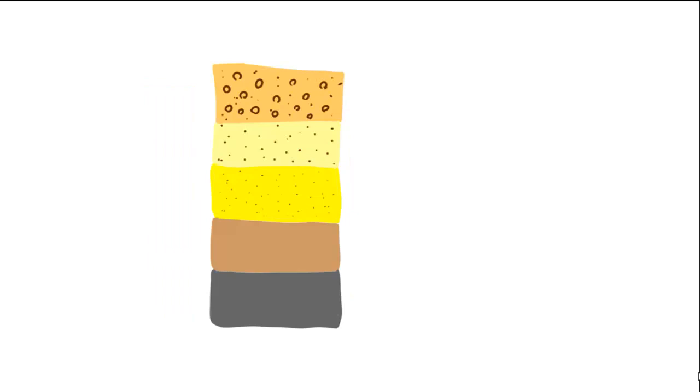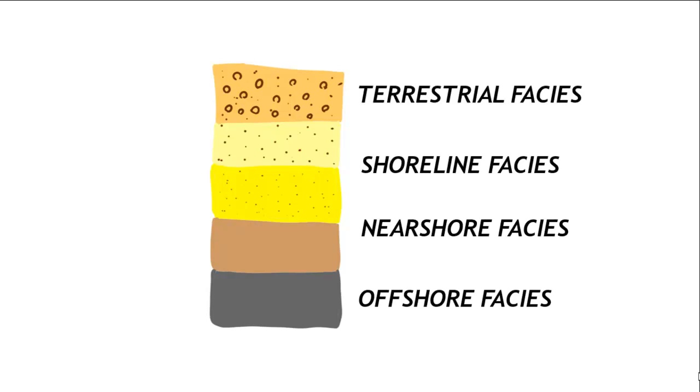That is the sedimentary signature of sea level dropping at a given location, also called a regression. You start with offshore marine facies, and then as time goes by, you get nearshore facies that are still marine, shoreline facies, and then the terrestrial stuff.